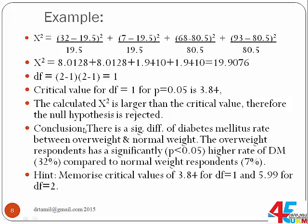Conclusion: there is a significant difference in diabetes mellitus rate between overweight and normal weight respondents. The overweight respondents have a significantly higher rate of diabetes mellitus of 32% compared to normal weight respondents at 7%. For your exam, please memorize the critical values of 3.84 for degree of freedom of 1 and 5.99 for degree of freedom of 2.